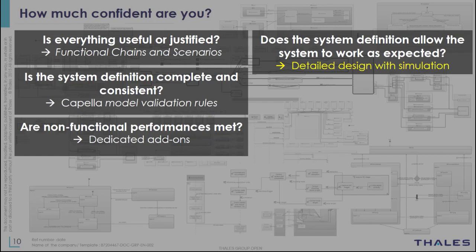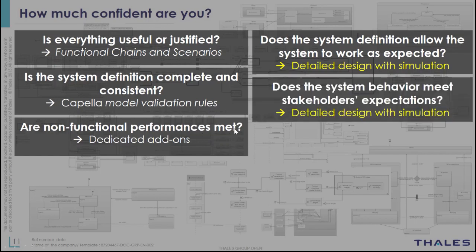Are all the transitions well configured to meet the expected behavior? Maybe you are missing a functional change to achieve an expected behavior, and if you don't execute the model, you will not see this problem. Another question is: does the system behavior meet stakeholders' expectations? It's really hard for the stakeholders to look through all the scenarios you have captured and mentally visualize if these are really the behaviors they want. Simulation is a really powerful tool to start a discussion with customers about the expected behavior of the system.